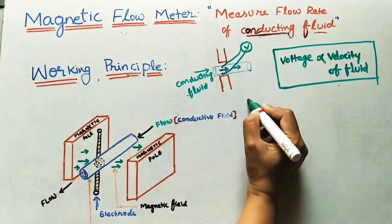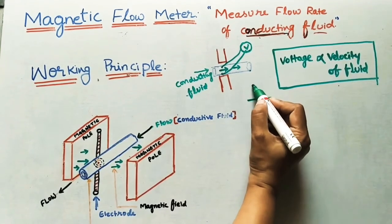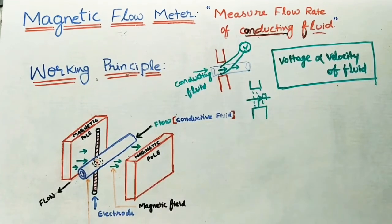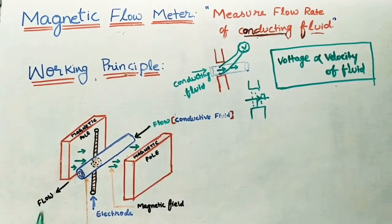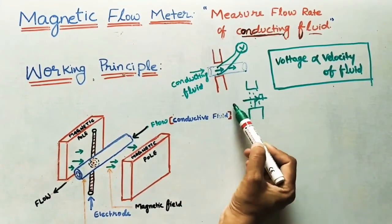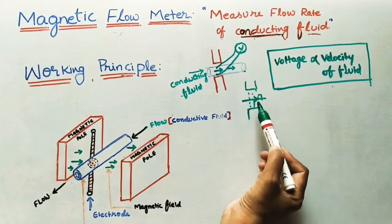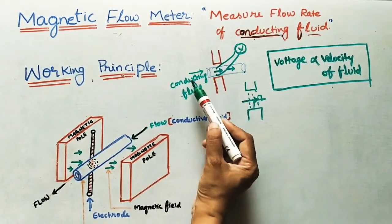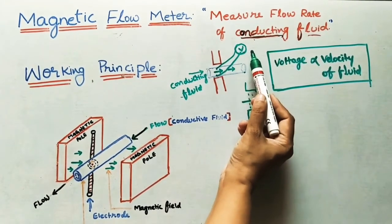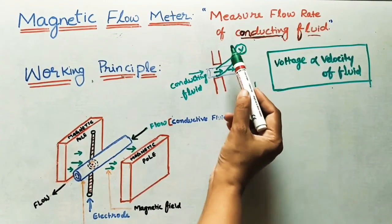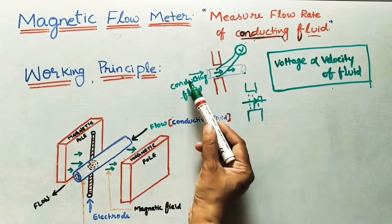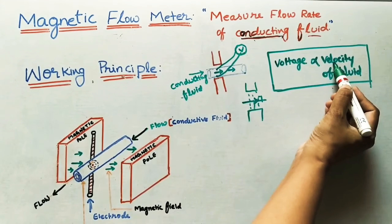The conducting fluid flows in one direction and the magnetic field is perpendicular to it — that is called transverse. According to this working principle, when a flowing conducting fluid is subjected to a transverse magnetic field, the flowing conducting fluid cuts the magnetic field and causes a voltage to be induced. This induced voltage is proportional to the velocity of the conducting fluid — that is the flow rate. If you know the velocity, you can find the Q value.